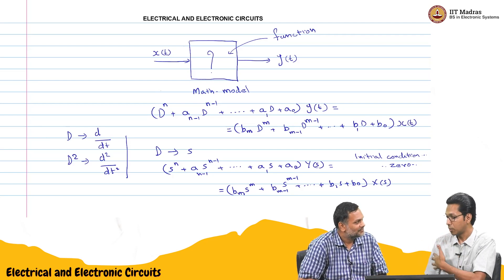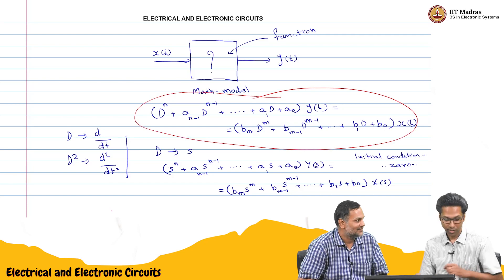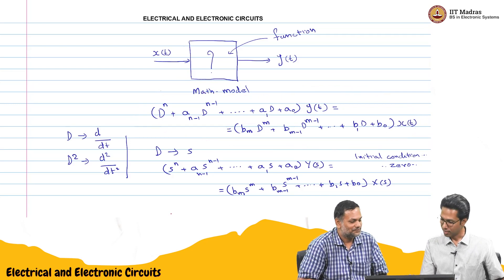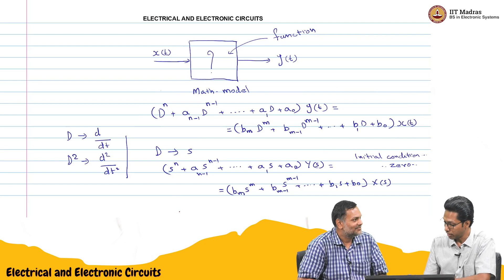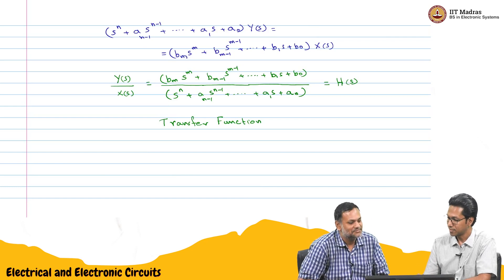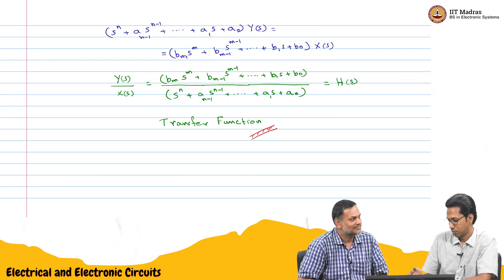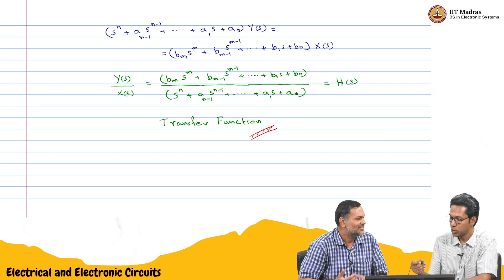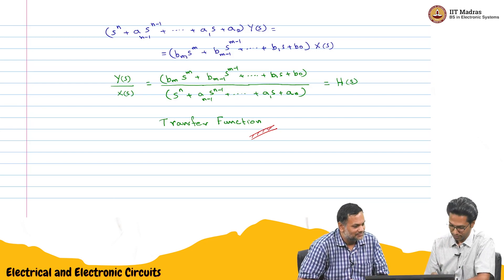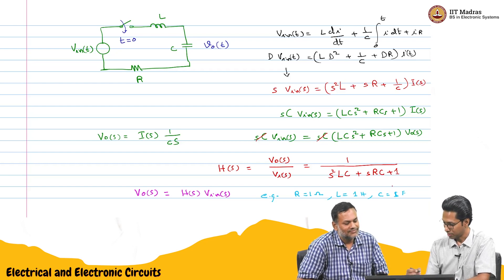Without Laplace transform, we would have tried writing the differential equations and break our head. Since we know how to represent a differential equation in the Laplace domain, we could represent in this form. Things became a lot easier. There is something called transfer function that we have learned new, which is the function that relates, the ratio of output to input in the s domain with no initial condition. Then we actually tried for a circuit, we got the transfer function for this.